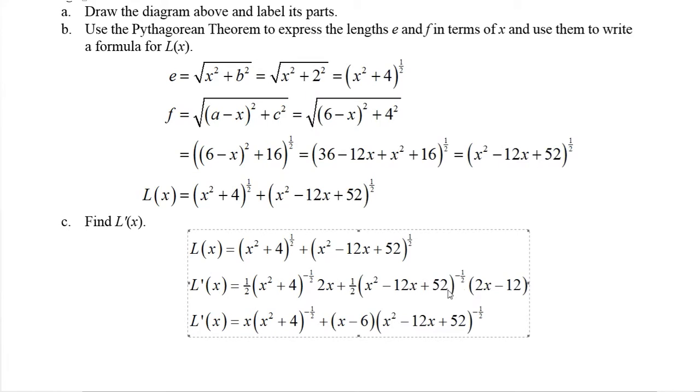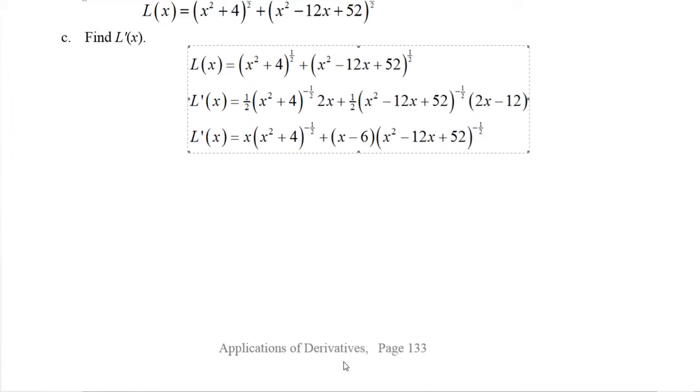If we take the one half times this and distribute, we get x minus 6. We got x minus 6 times this guy here. And then here the two and the one half cancel and we have the x put in front. So there's an expression for L prime. Now we want to set that equal to zero and solve.